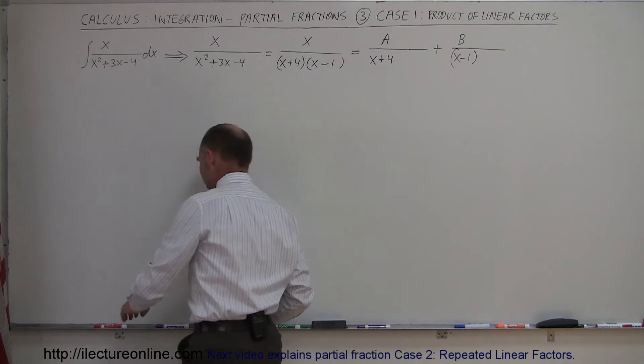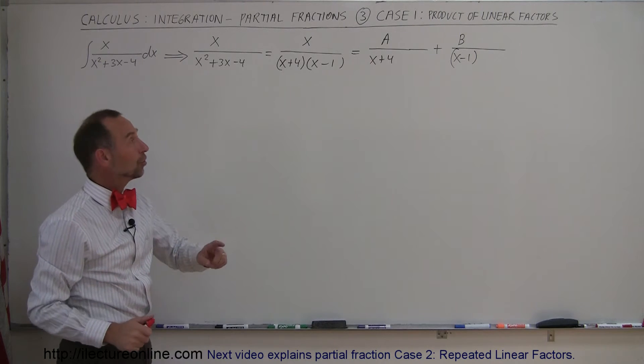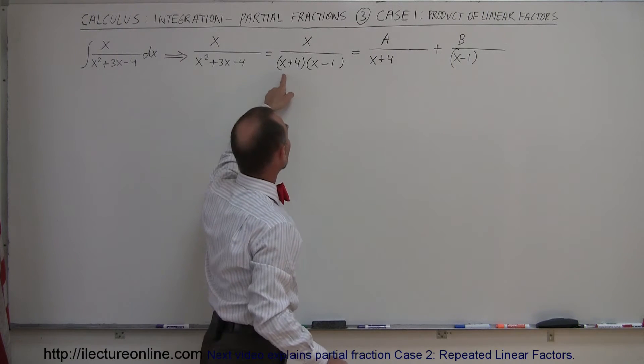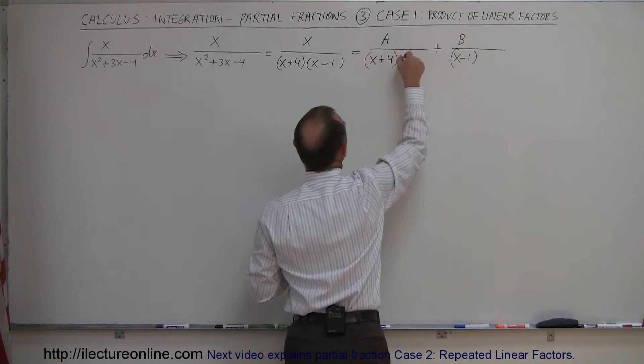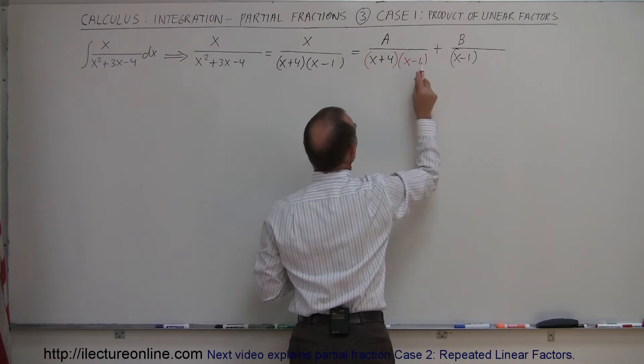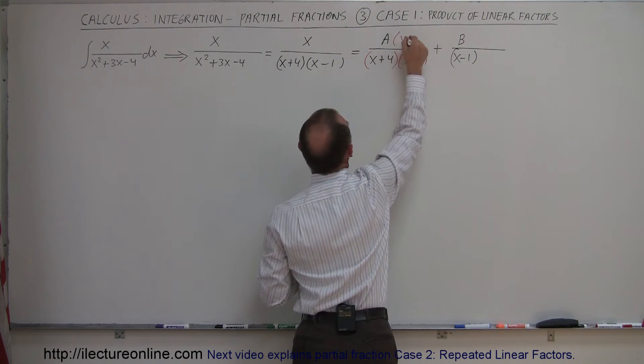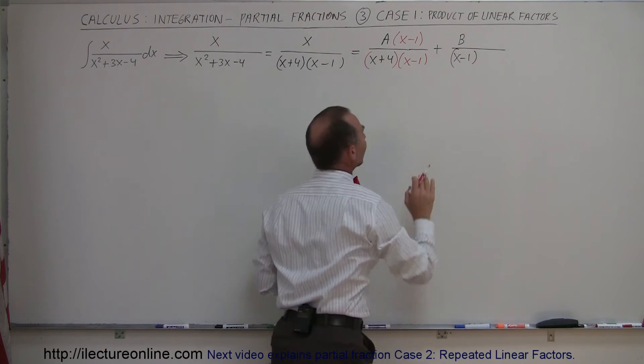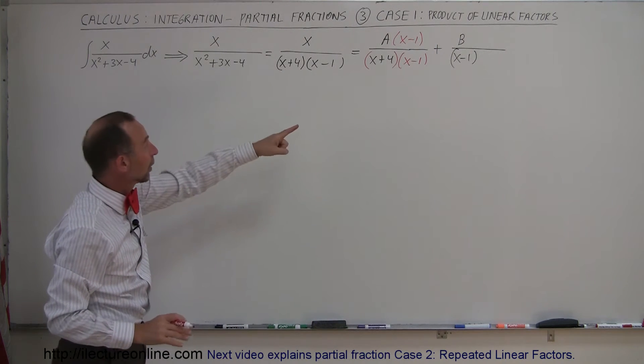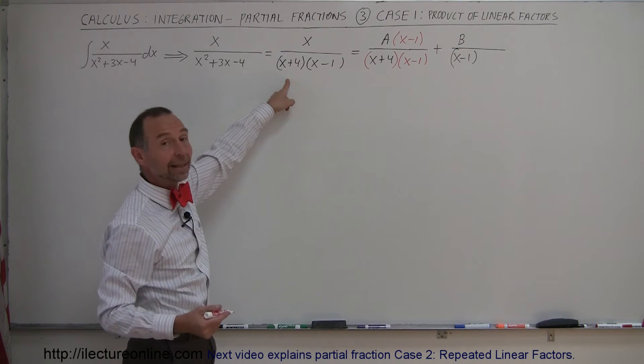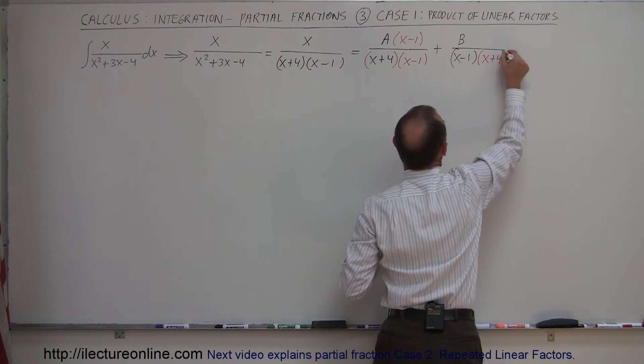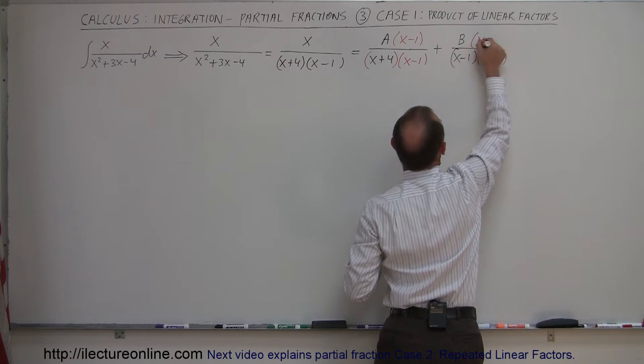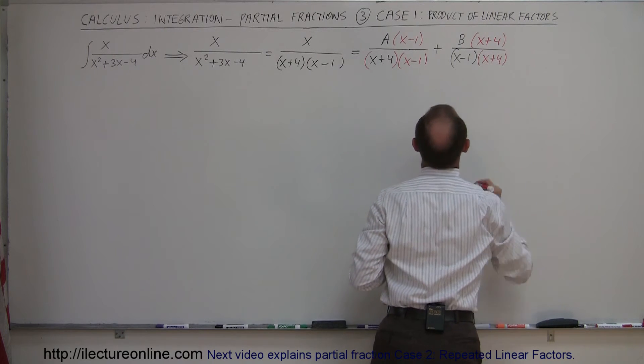So let me use a different color. It makes it easier to see. So what do I need to do to this denominator to make it look like this denominator? Well, I need to multiply it by x minus 1. So multiply this times x minus 1. Of course, if I do that to the denominator, I have to do it to the numerator. And over here, same thing. What do I need to do to x minus 1 to make it look like this? Well, multiply times x plus 4. So if I go x plus 4 here, then of course I must also multiply the numerator x plus 4.